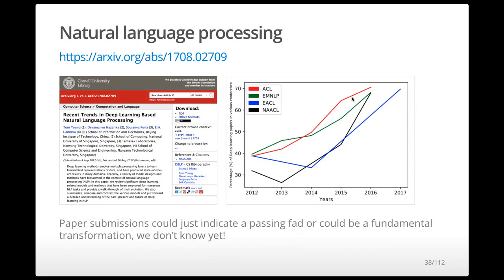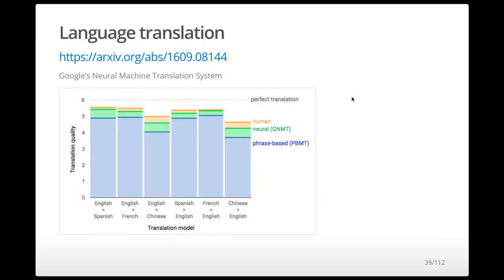In natural language processing, papers in computational linguistics conferences went from around 35% to 70% using deep learning over the same period. NLP has not been fundamentally transformed by deep learning, but there's definitely promising work. One specific area — language translation — saw huge improvements when Google replaced their phrase-based translation system with a neural machine translation system. In some language pairings it's getting very close to human-level translation. That's a huge win for deep learning.